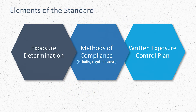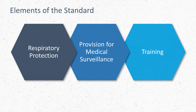Under the silica standard, employers must meet certain requirements. Employers must determine exposure to respirable crystalline silica, determine regulated areas, and create a written exposure control plan for their facility. Employers are also responsible for implementing a respiratory protection program if necessary, providing employees with medical surveillance, and providing training related to the hazards associated with respirable crystalline silica exposure.